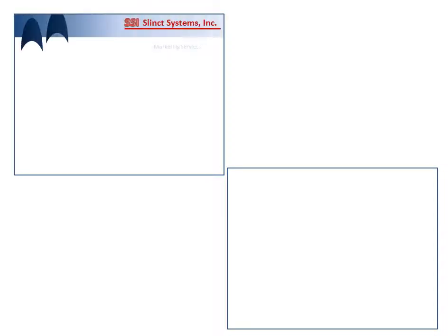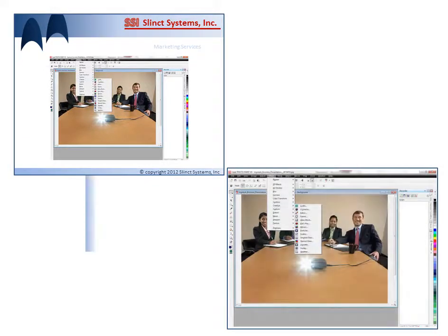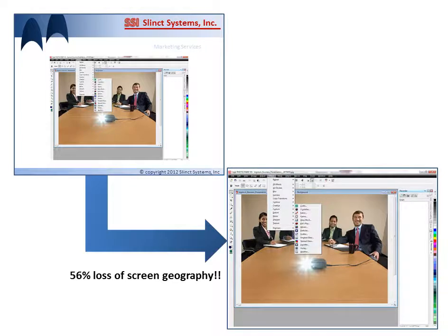Perhaps we could pretty it up a bit, make it more narrow. They do that — they add a little copyright at the bottom. But the screen image has to stay the same size, and again they're losing 56% of screen geography. A big problem.